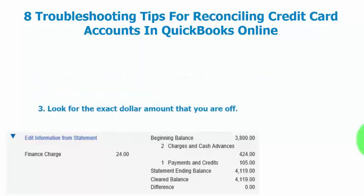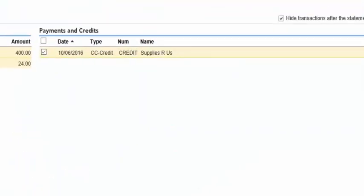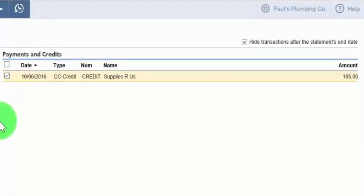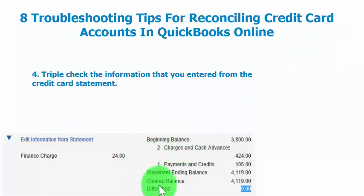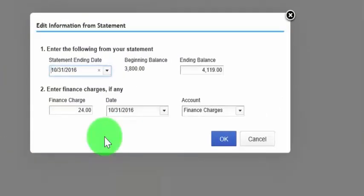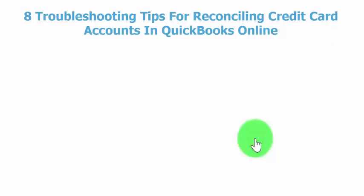Tip three: look for the exact dollar amount that you are off by. For example, if your difference is $50, look for a transaction for that amount on your credit card statement, and look on both the charges and cash advances section and the payments and credits side of the reconcile window. Tip four: triple check the information that you entered from the credit card statement. Making sure this information has been entered correctly is key. If you transpose a number when you entered it, that will cause your out of balance. Click that link and verify the information is correct, then close out.